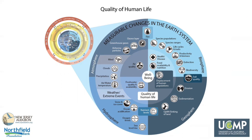As humans, we affect and are affected by the Earth's systems in many ways. The quality of human life is directly tied to the condition of our planet. In the center of the measurable changes section of the diagram are changes that most directly affect our health and well-being, including the quality and availability of fresh water and food. Poor environmental conditions can cause displacement of human populations.